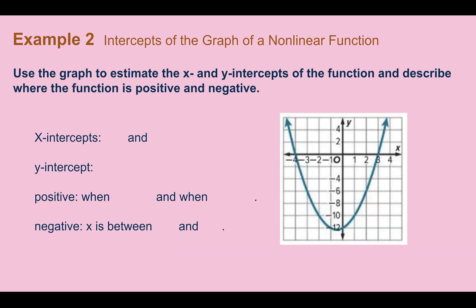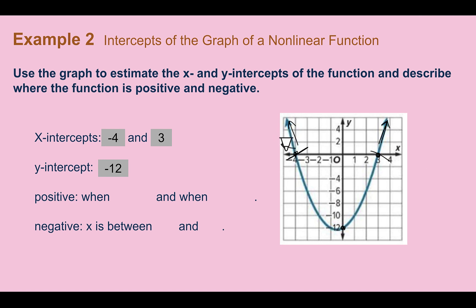Example 2: Intercepts of the graph of a non-linear function. This time there are two x-intercepts — one at negative 4 and one at 3. The y-intercept is where it crosses the y-axis, at about negative 12. The function is positive to the left of negative 4 (x < −4) and to the right of 3 (x > 3). It's negative between negative 4 and positive 3.